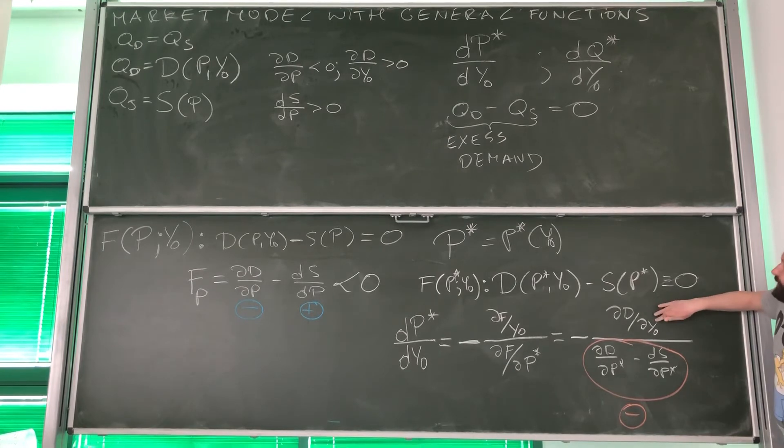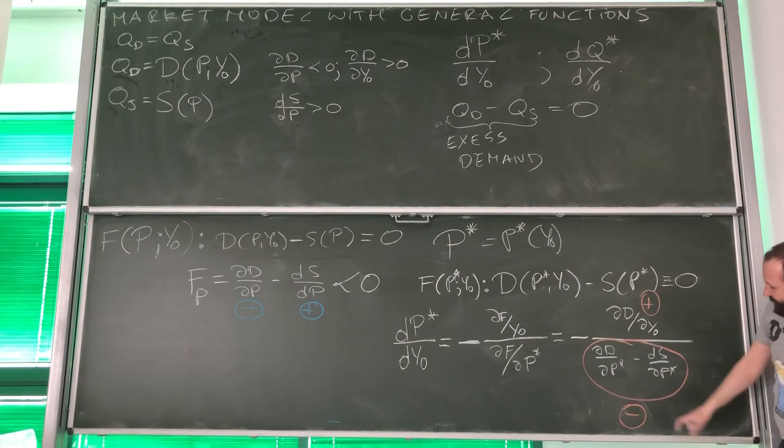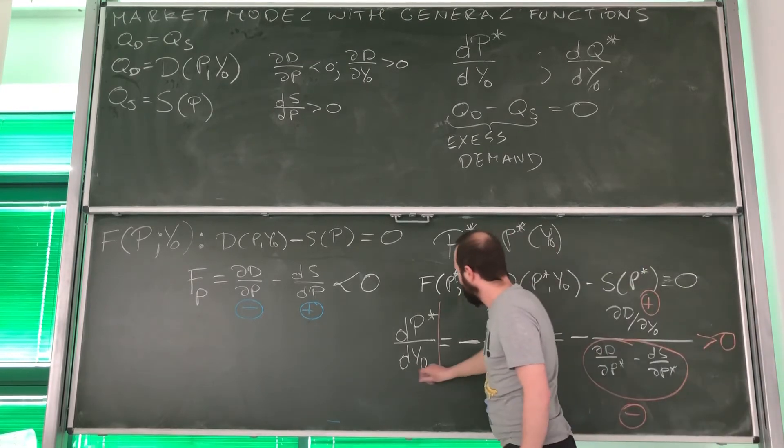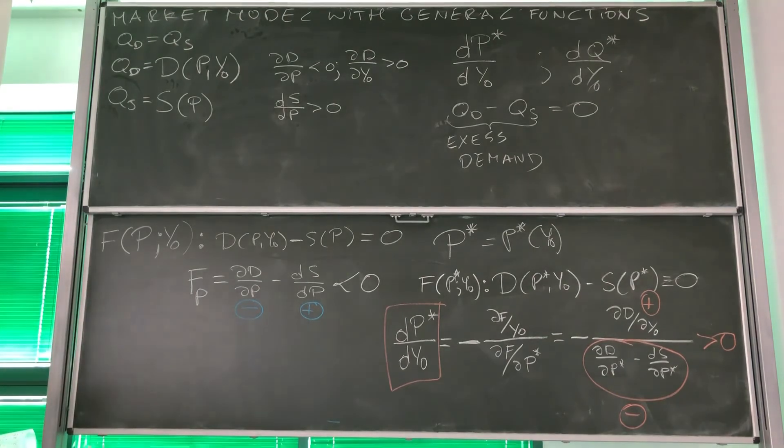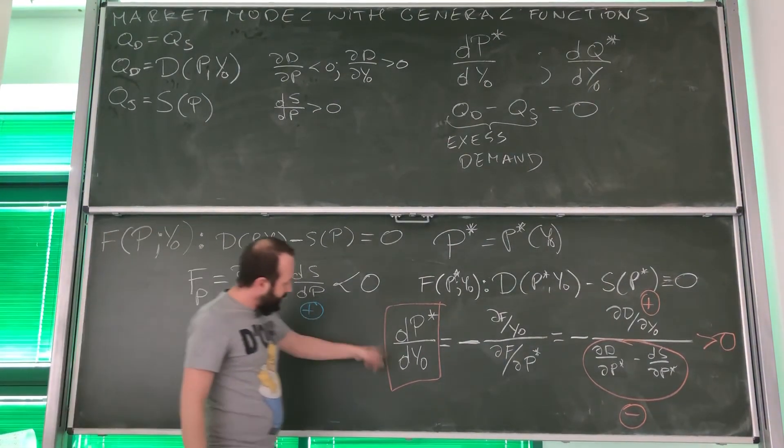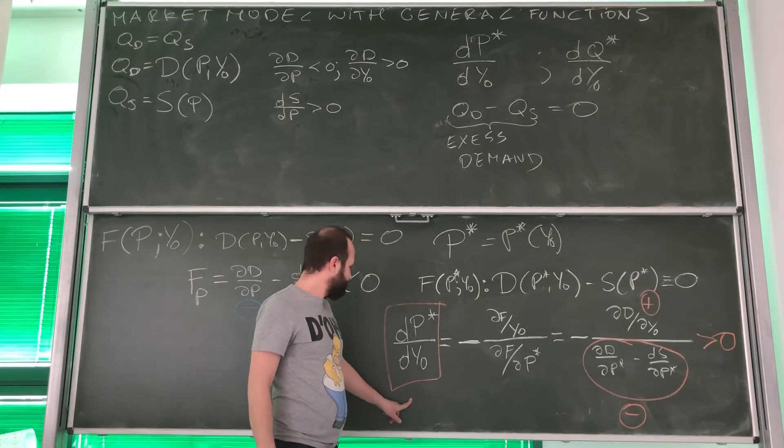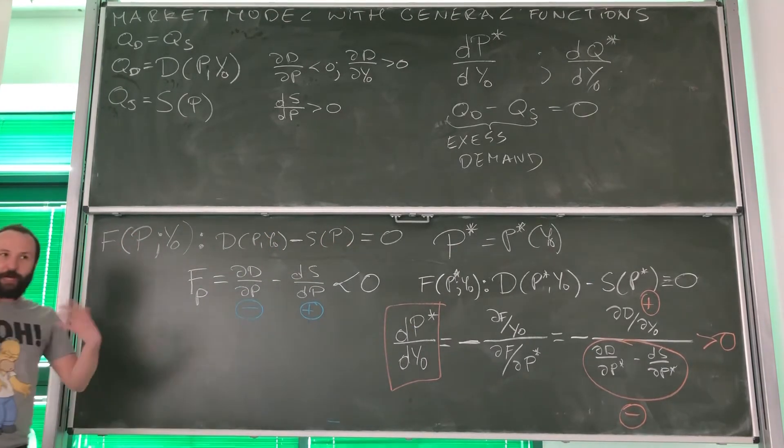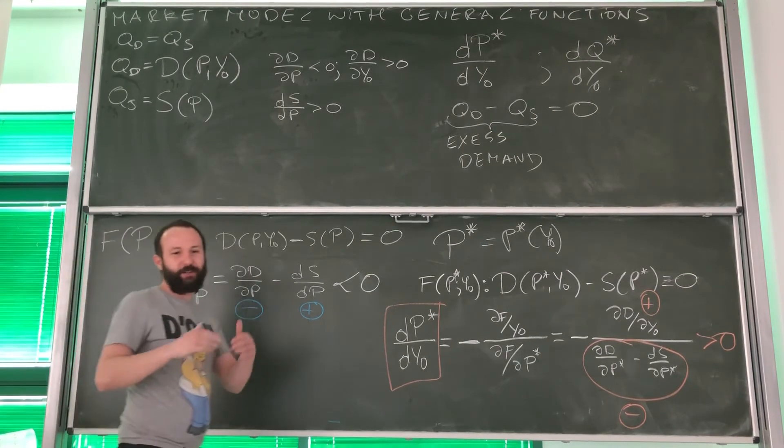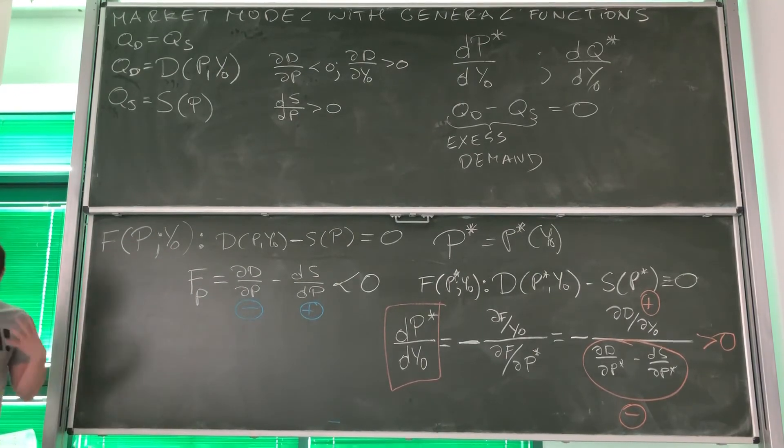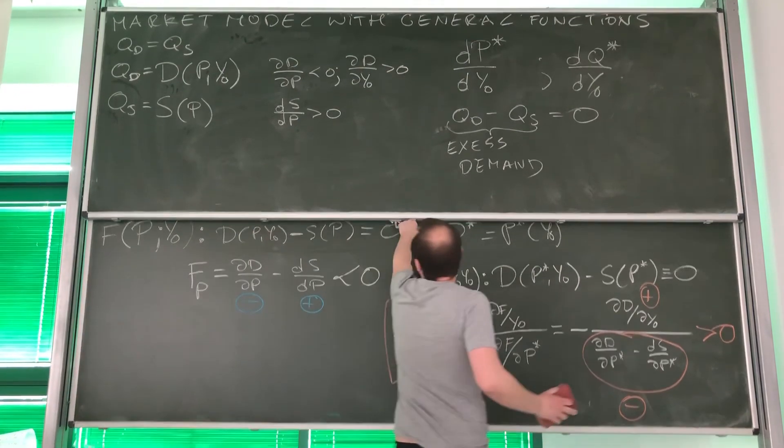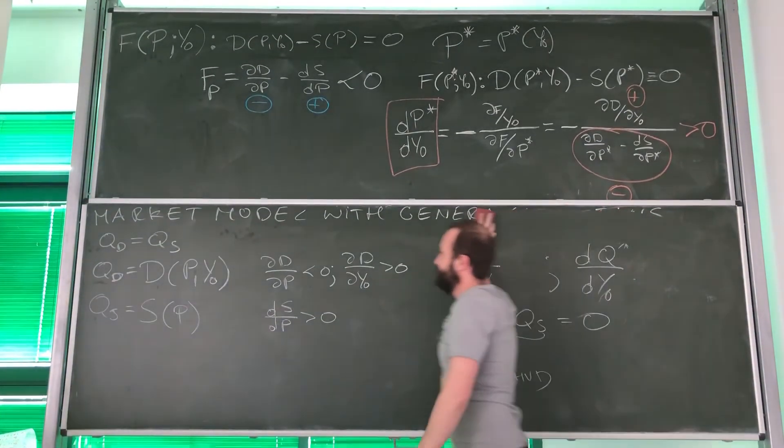The higher the income for customers, we see the higher the demand, and this is positive. Minus and minus makes plus. We know that this expression is positive. So what we find out is that the higher the income, the higher the equilibrium price, even if the functions are not linear, even when those functions have general forms.